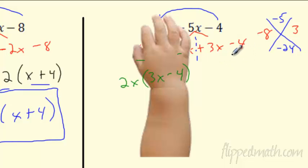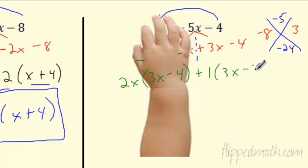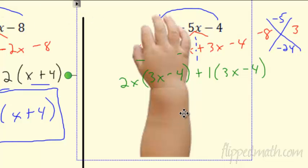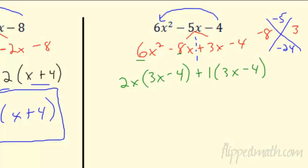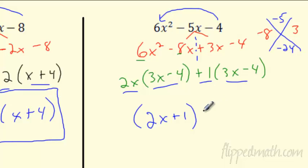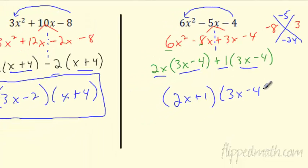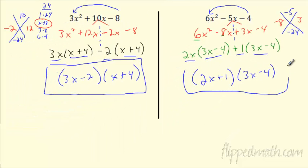Now look at the last two terms: 3x minus 4. What number divides 3 and 4? Nothing does — so you're pulling out just a 1. 1 is the only thing you can factor out of that, and 1 divides everything. Don't freak out if that happens — it's just a plus 1. If it would have been minus there, you could pull the minus out. And am I right? 3x minus 4 matches 3x minus 4 — I know I'm golden. So: 2x plus 1 times 3x minus 4 is the answer.